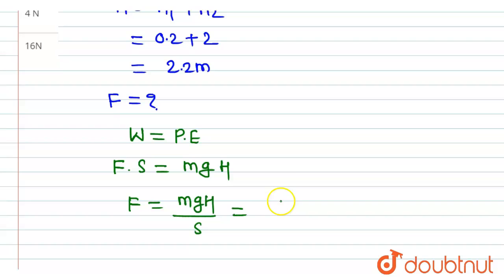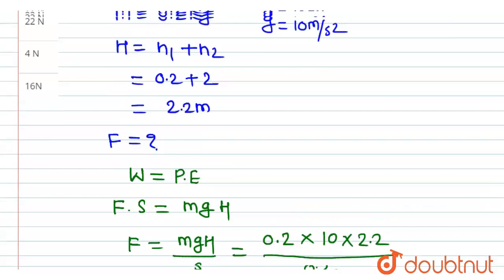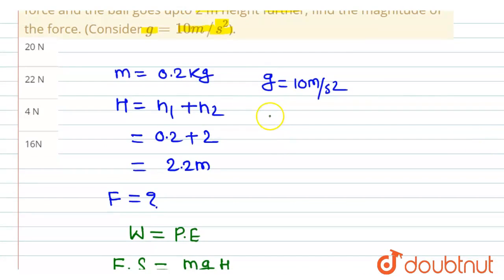Now putting respective values here, the value of mass of the ball is 0.2 into the value of gravity is 10 into the value of height is 2.2 and displacement is 0.2 meter. Because as force is applied, the hand moves up to 0.2 meter.